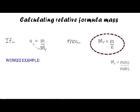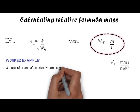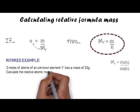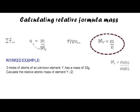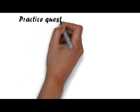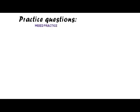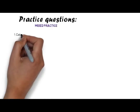If three moles of atoms of an unknown element Y have a mass of 33 grams, we calculate the relative atomic mass using Mr = m / n. Mass is 33 grams and number of moles is 3, so 33 ÷ 3 = 11. Looking on the periodic table, the element with relative atomic mass of 11 is boron — so we can actually identify the element.